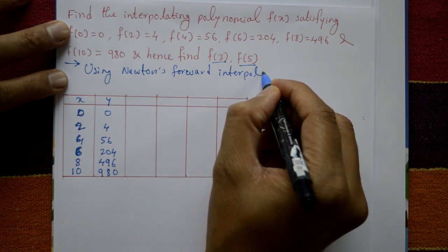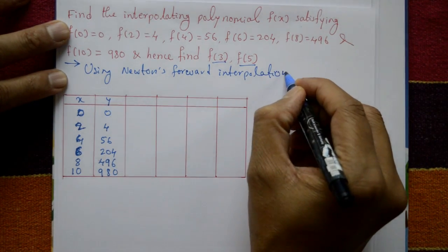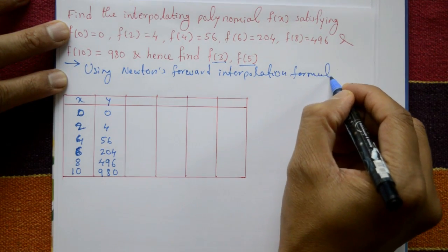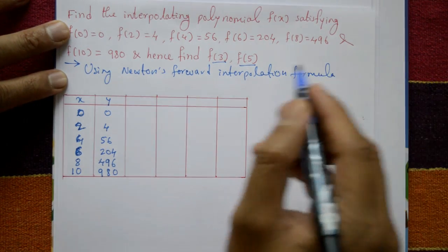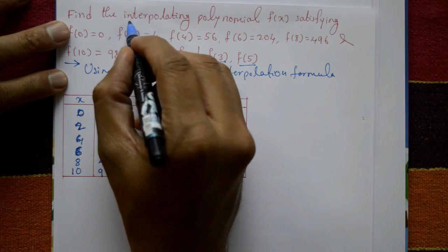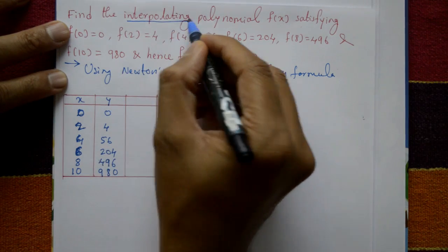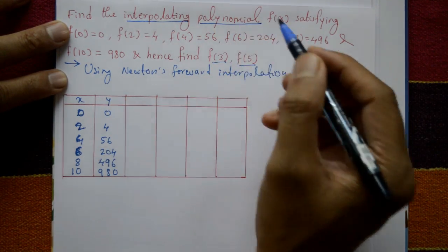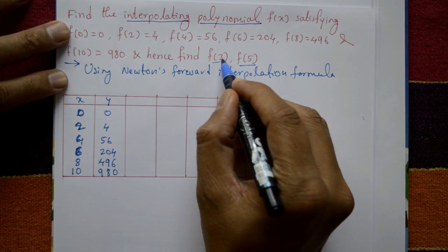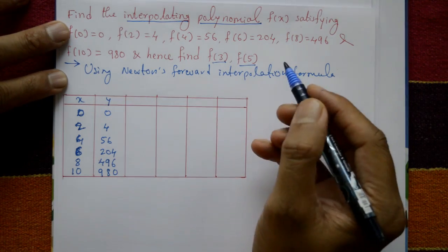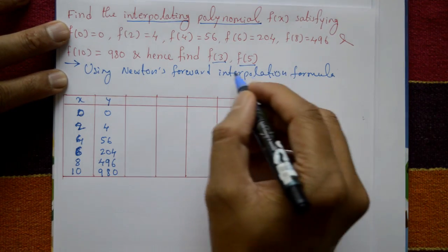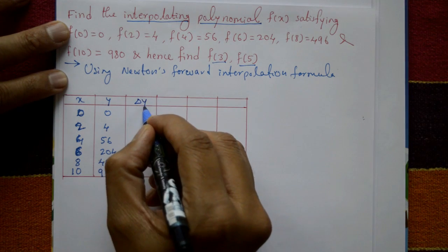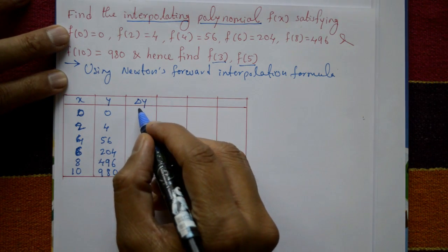First, find the interpolating polynomial equation, then put x = 3 and x = 5. So we use Newton's forward interpolation with the delta (Δ) symbol for forward differences.